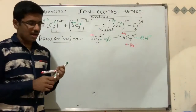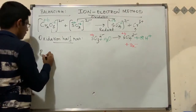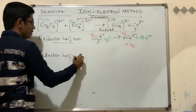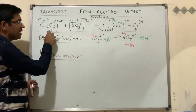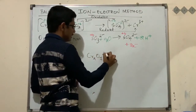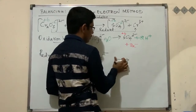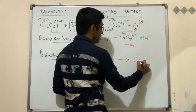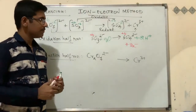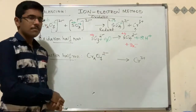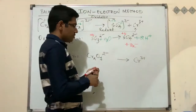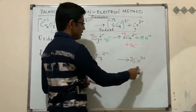Now do the same for the reduction half-reaction. Dichromate ion Cr₂O₇²⁻ → Cr³⁺. First balance chromium: 2 chromium on the left, so place 2 before Cr³⁺. Now balance oxygen: 7 oxygen on the left, none on the right. Add 7H₂O to the right side for oxygen. Adding 7H₂O brings 14 hydrogen atoms on the right, so add 14H⁺ to the left side. Atoms are now balanced.